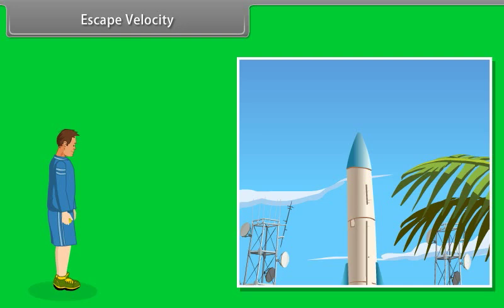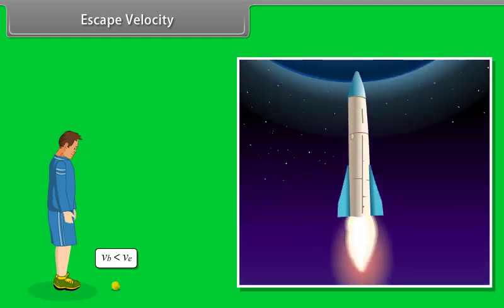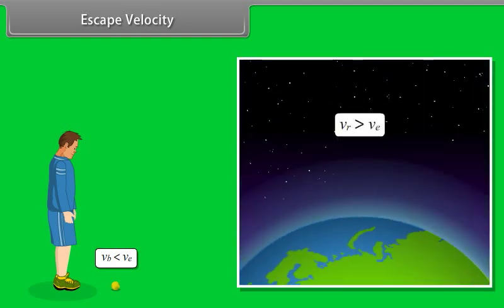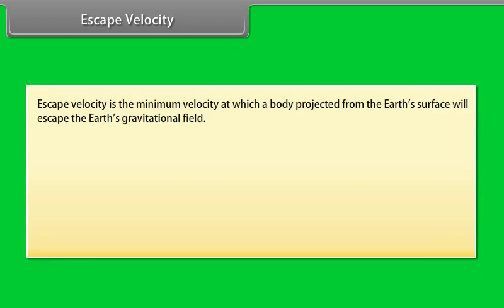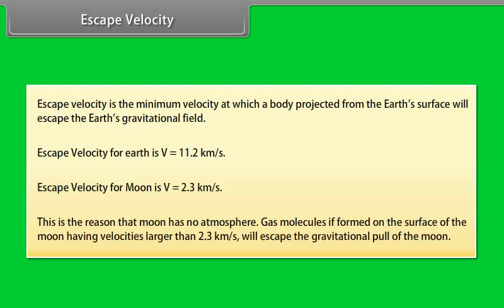Escape velocity. Can we throw an object with such high initial speed that it does not fall back to the earth? Yes. If we throw an object with escape velocity, it does not fall back to the earth. Escape velocity is the minimum velocity at which a body projected from the earth's surface will escape the earth's gravitational field. Escape velocity for the earth is V is equal to 11.2 km per second. Escape velocity for moon is V is equal to 2.3 km per second. This is the reason that moon has no atmosphere. Gas molecules if formed on the surface of moon having velocities larger than 2.3 km per second will escape the gravitational pull of the moon.